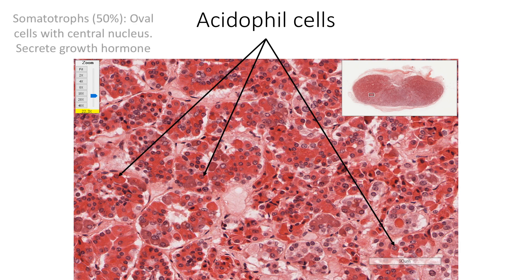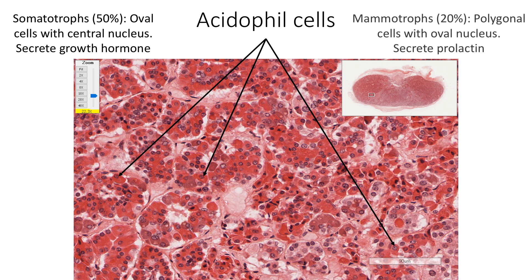Somatotrophs form 50% of the chromophil cells. They are medium-sized oval cells with a central nucleus. Mammotrophs form 20% of the chromophil cells and are large polygonal cells with an oval nucleus. Mammotrophs are best seen during pregnancy, with their number increasing throughout pregnancy, and these cells also undergo hypertrophy during lactation.